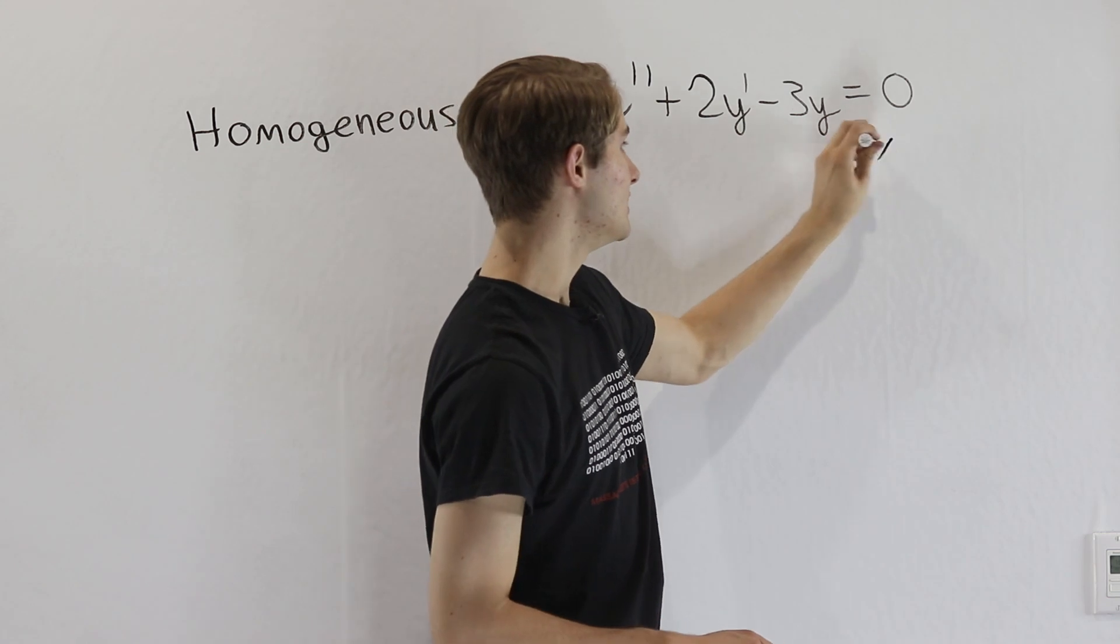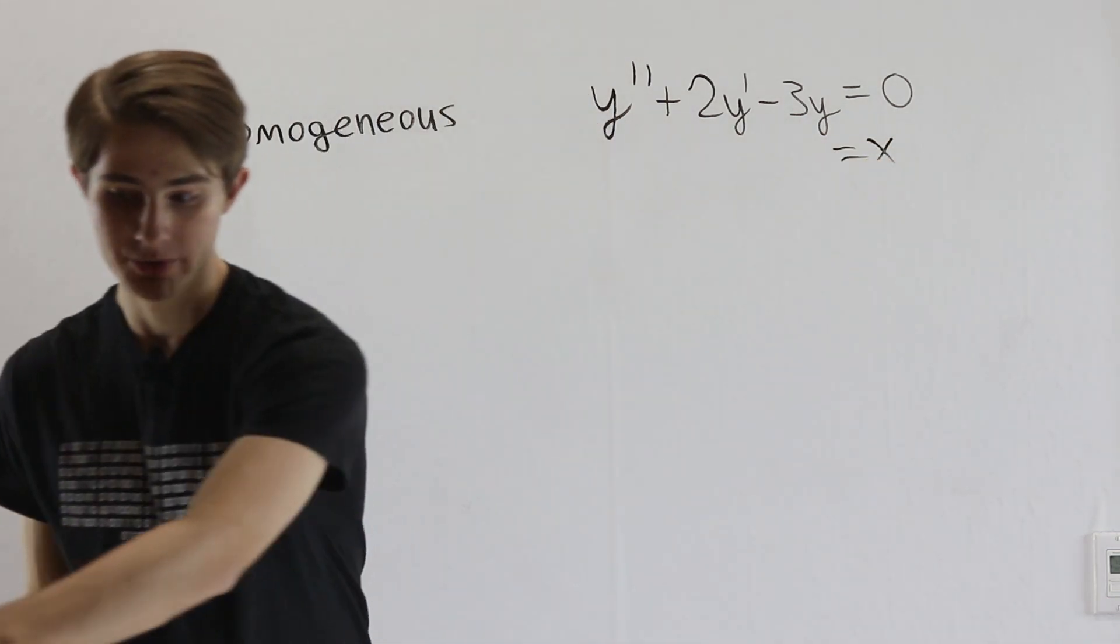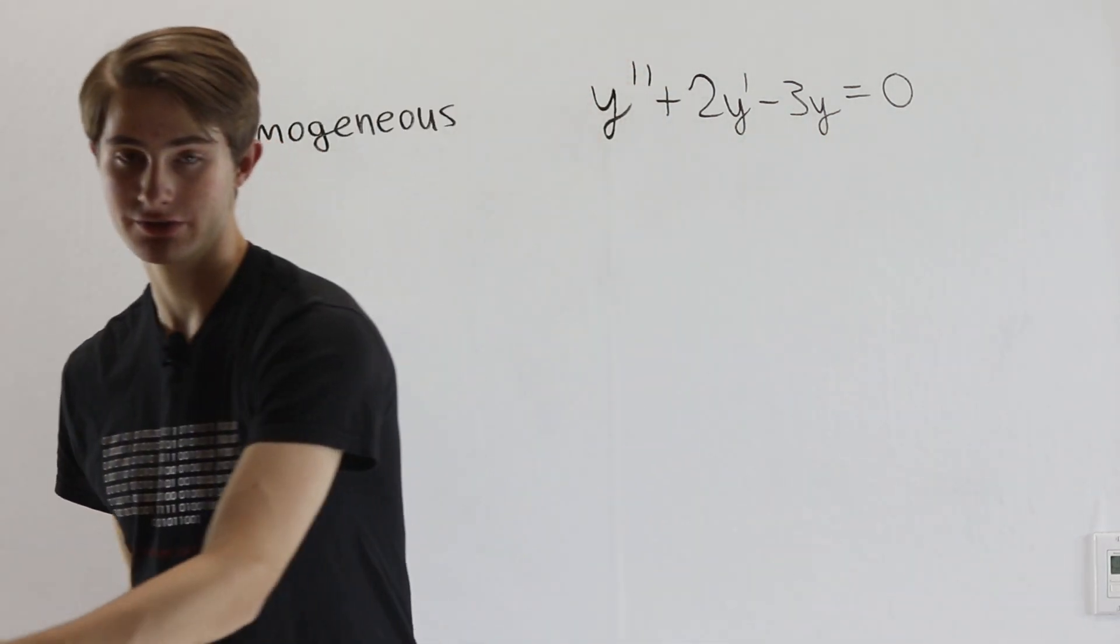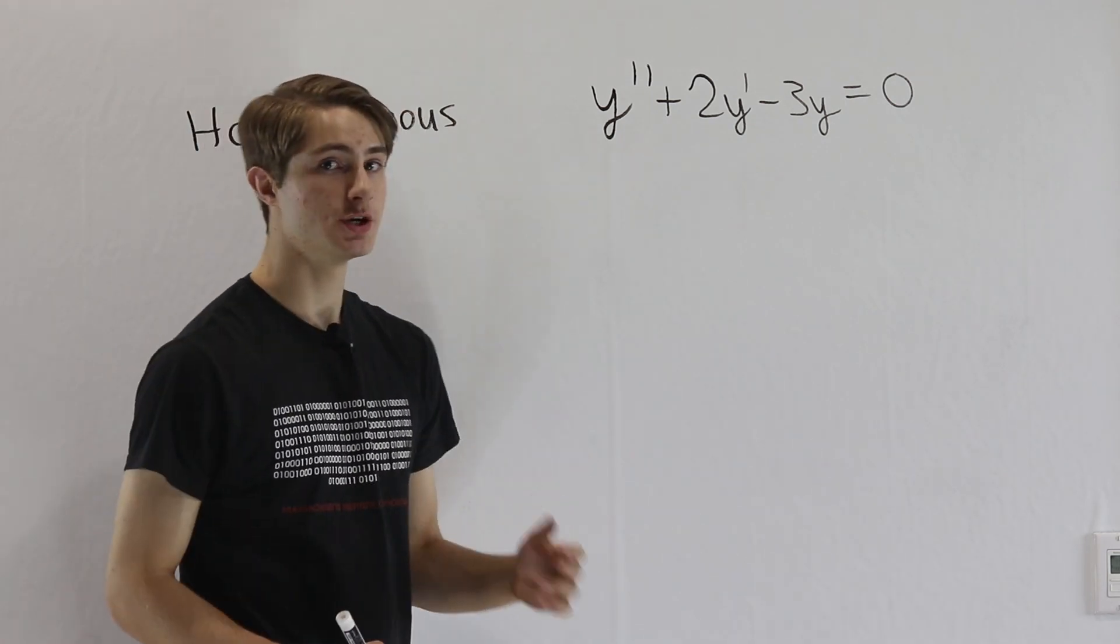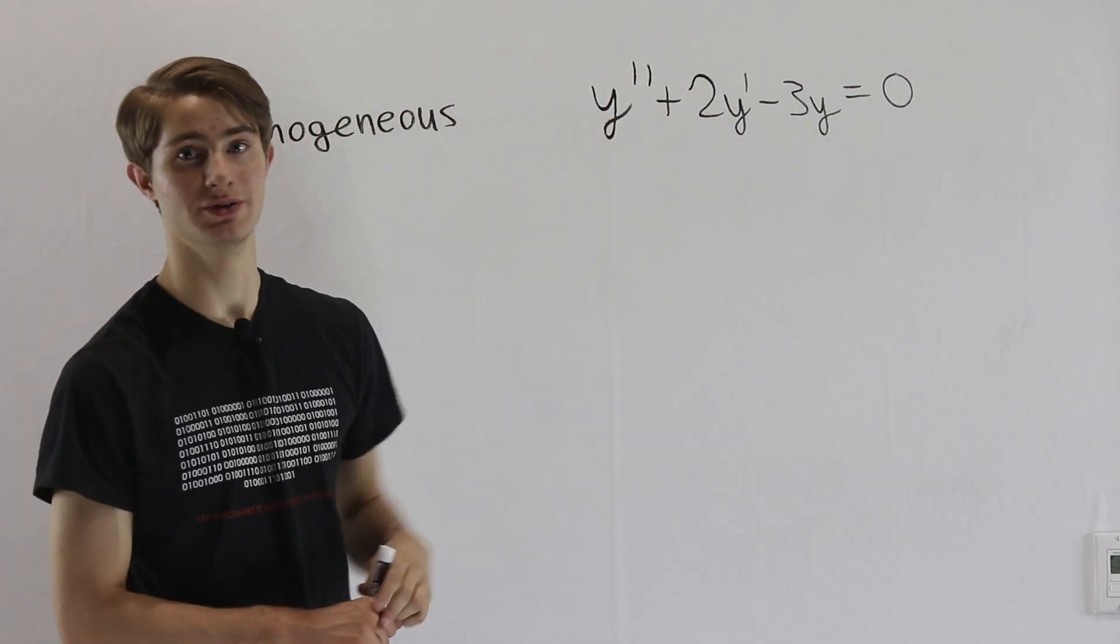If we had, for example, an equals x on the right side of the equation, this would no longer be homogeneous. So the fact that we have a 0 over here is why we call it a homogeneous differential equation. And in this video, we'll only be talking about those that have constant coefficients like 1, 2, and negative 3.